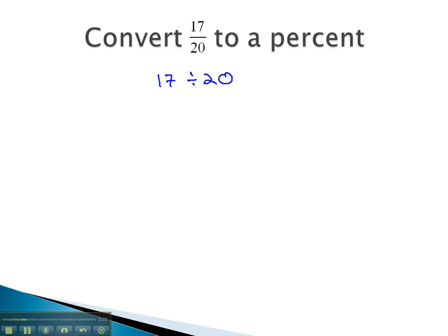I think we often get in the habit of putting the larger number first. That is not the case. We put the top number first, the numerator first. 17 divided by 20, and that'll give us 0.85.